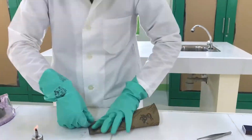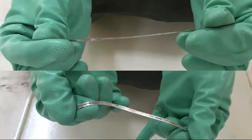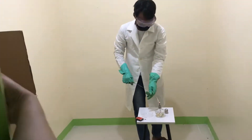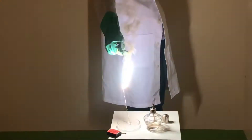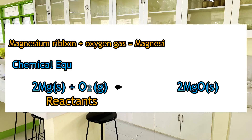Experiment number one: magnesium ribbon. Magnesium ribbon reacts with oxygen gas to form magnesium oxide, or white ash.